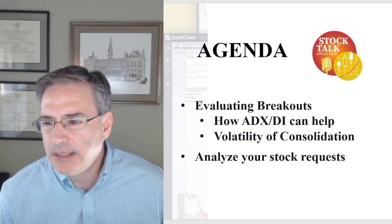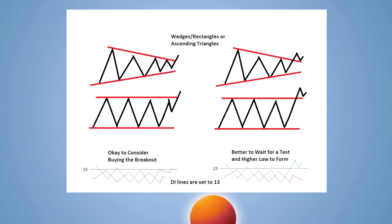Let's get into this first chart. The question had to do with breakouts from rectangular patterns. I sort of incorporate ascending triangles as well as wedges into that. I think all of these have sort of the same thing - the criteria you're looking for is going to take place in any one of these type of patterns.